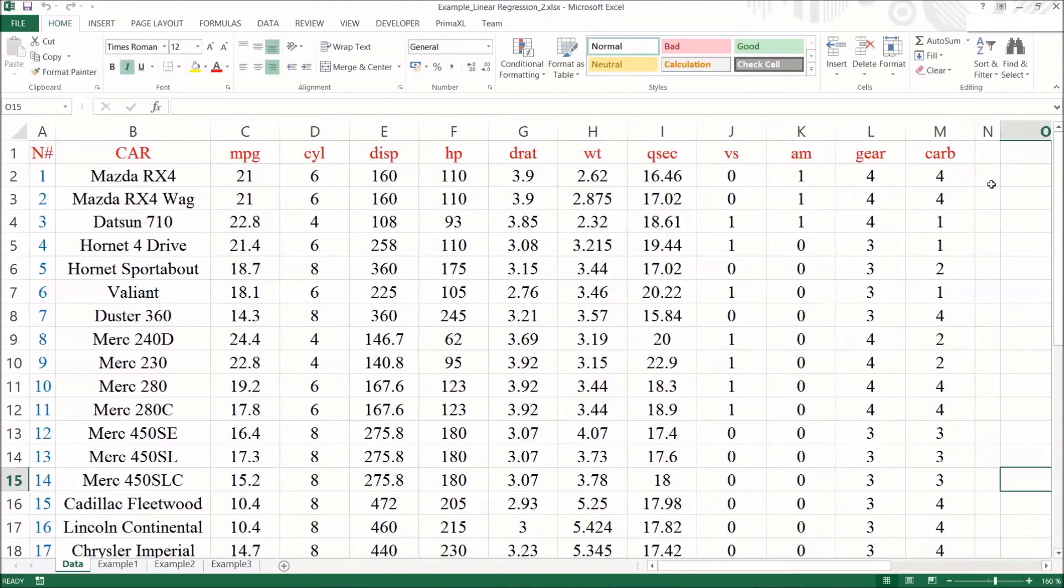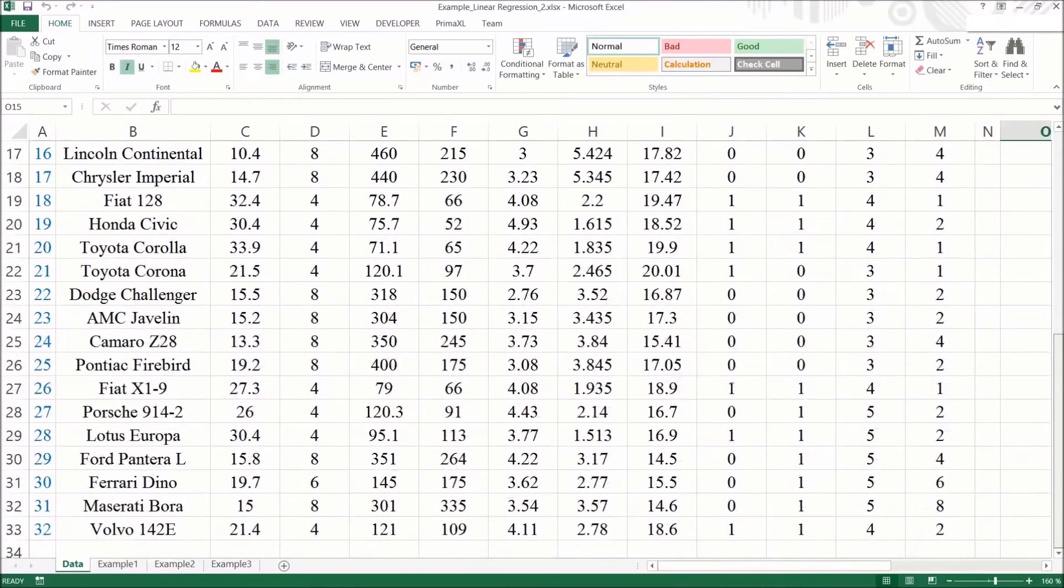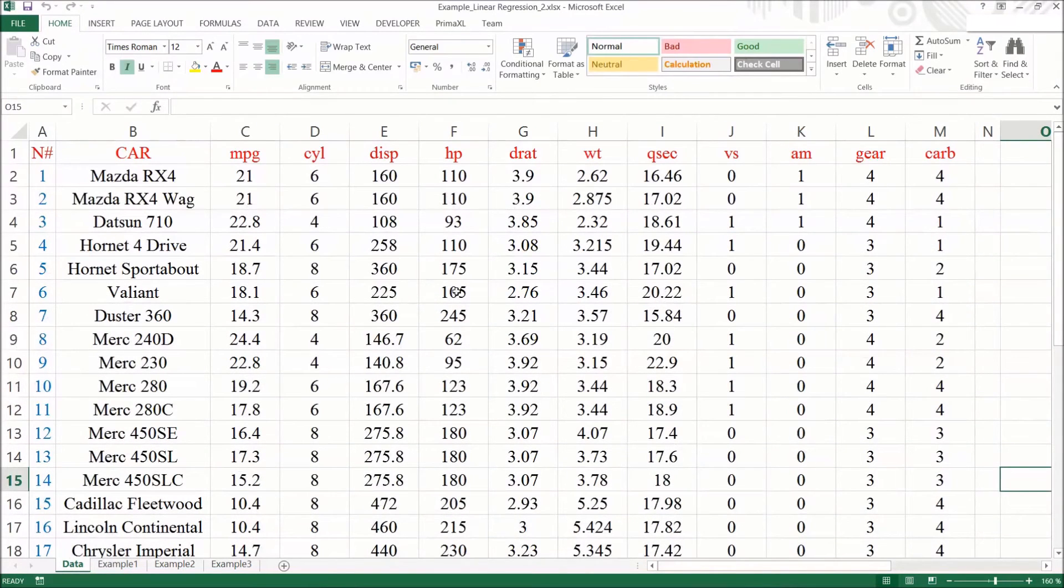We have the dataset as we can see here. The columns are named after the variables. The columns correspond to the MPG and 10 other features.